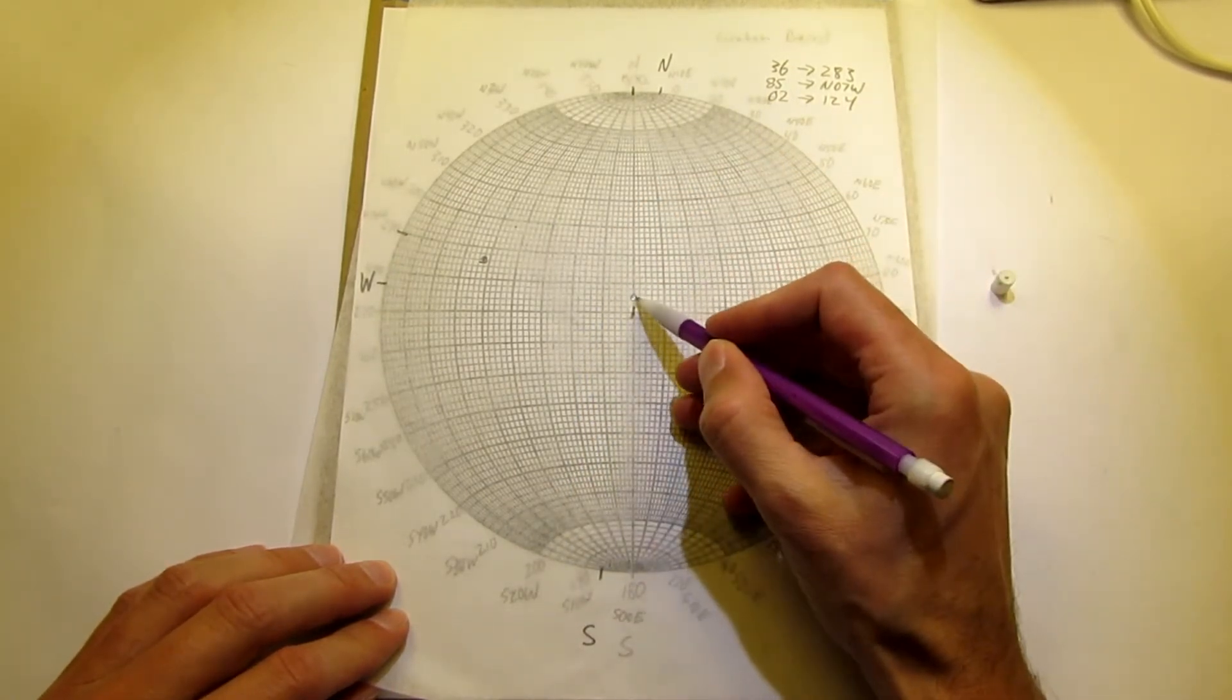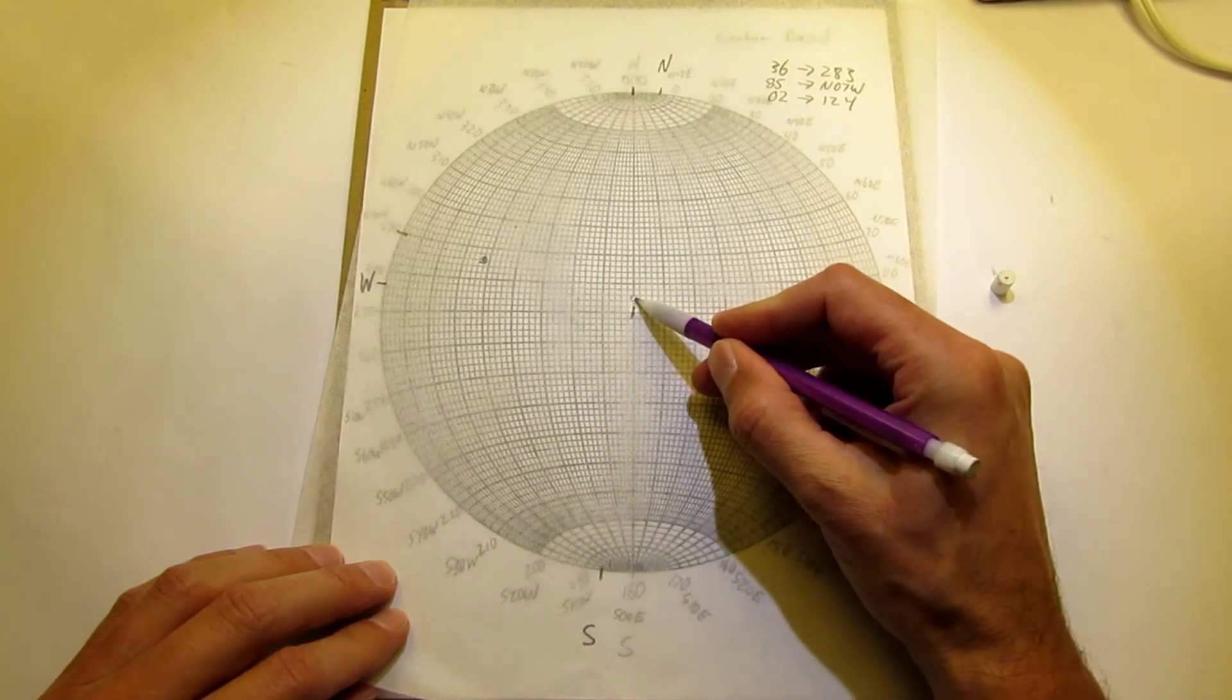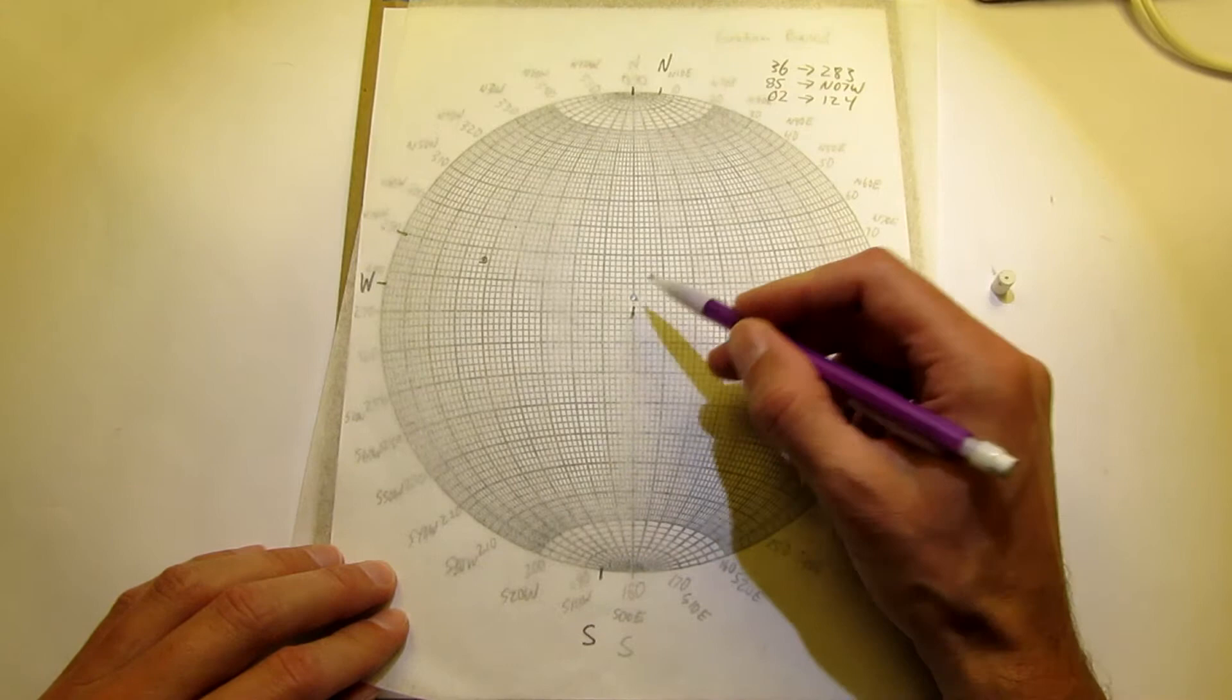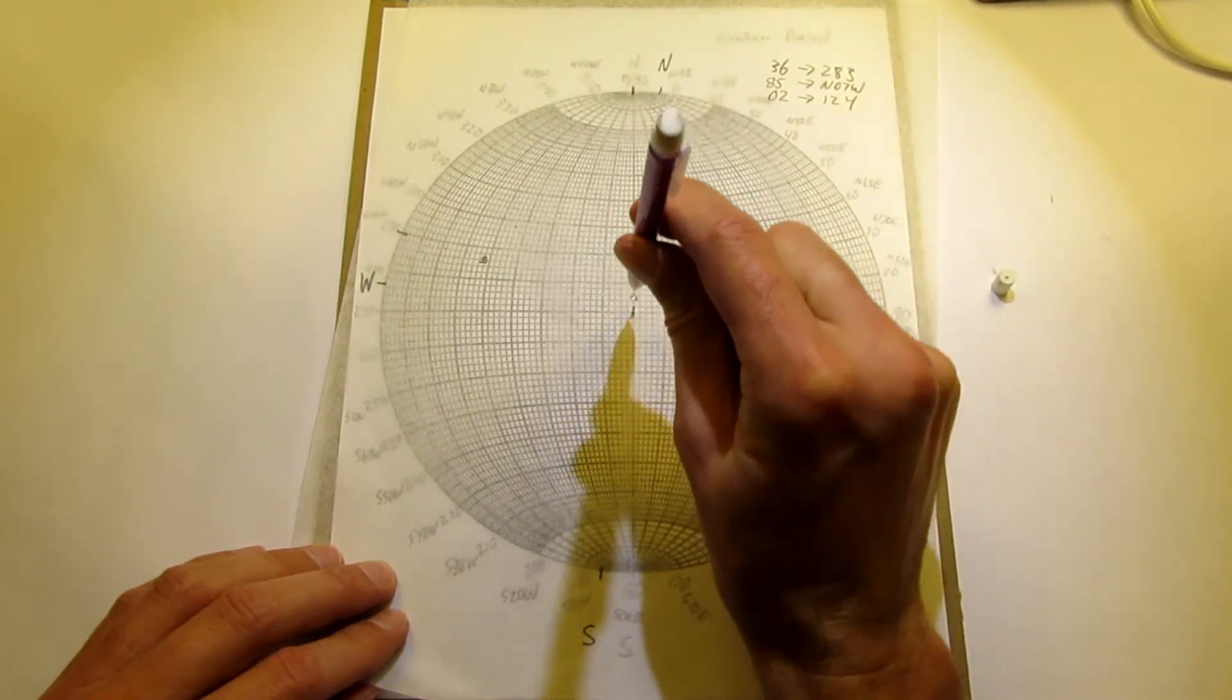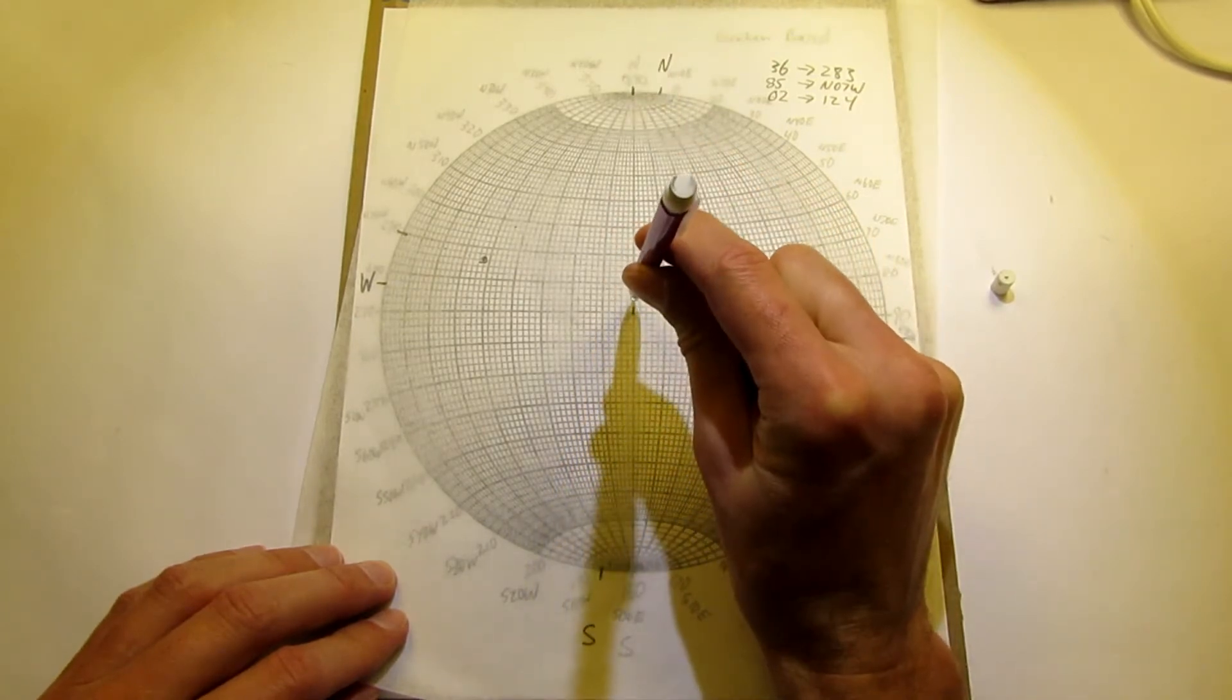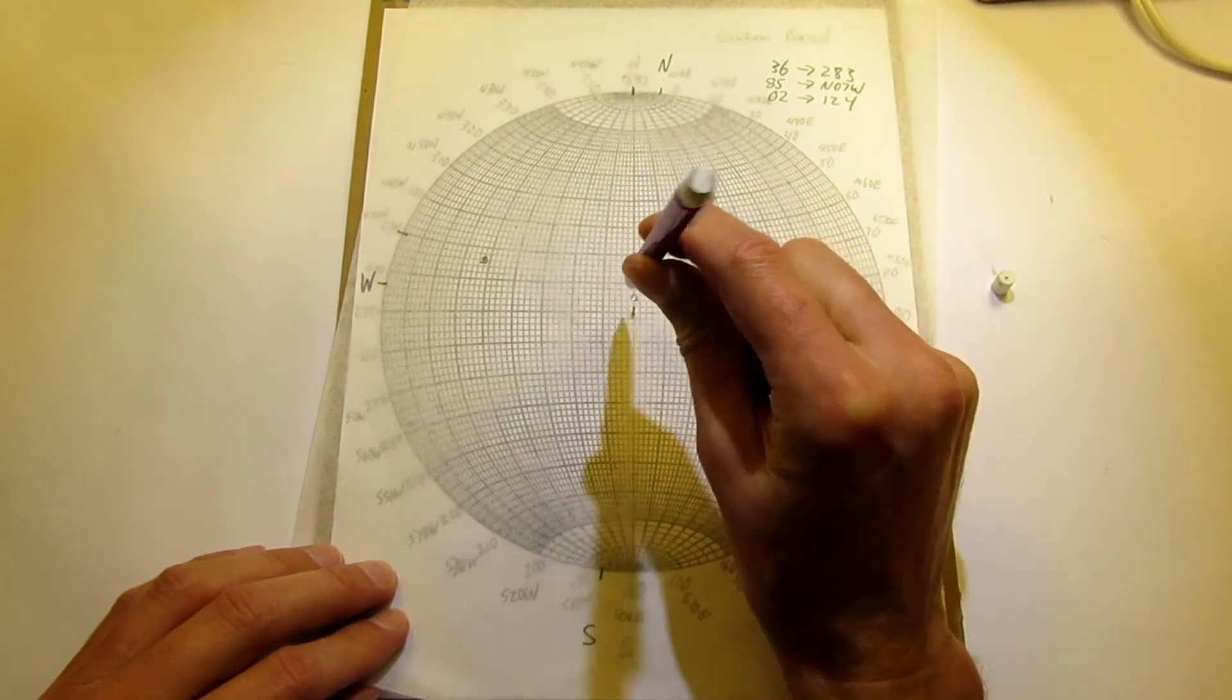Our puncture protector got in the way. It's right there. So you can see that steep lines plot towards the center of the stereo net because, remember, it's inside that bowl going down like this.